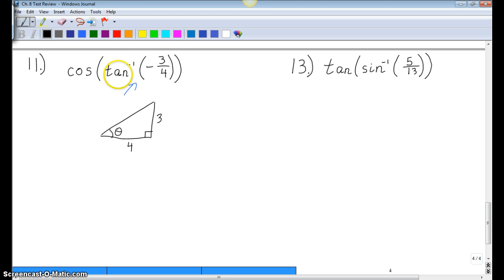What we're being asked to do then is evaluate the cosine of this angle here, theta. Well, cosine is 4 over hypotenuse. And fortunately for us, this triangle is a perfect Pythagorean triple. So our hypotenuse is 5, a 3, 4, 5 triangle. So in essence, cosine of tangent inverse of negative 3 fourths just gives us the cosine of theta to be 4 fifths. So your final answer is just 4 fifths.